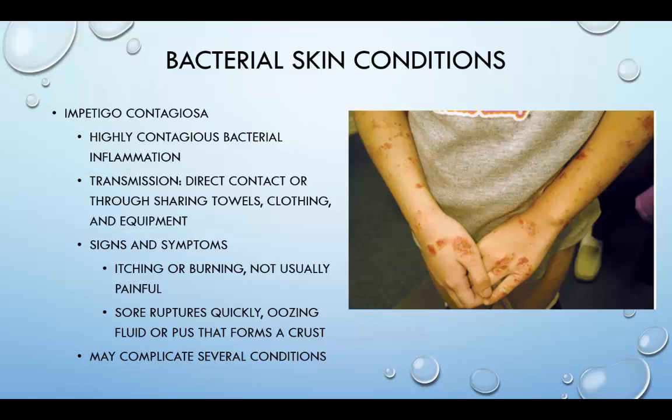Impetigo contagiosa is caused by Staphylococcus aureus, or in combination with beta-hemolytic streptococci. Lack of personal hygiene, including inadequate cleansing of clothing and equipment, can aid in the spread of this condition. Signs and symptoms include itching or burning that is usually not painful. Sores rupture quickly, oozing fluid or pus that forms a crust. Eventually the crust disappears, leaving a red mark that heals without scarring. This is commonly seen on the face, most often around the nose or mouth, and also favors body folds and areas subject to friction and occlusion, such as the thighs and armpits. The crust will frequently be found on the face, popliteal region, or antecubital fossa.